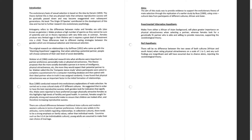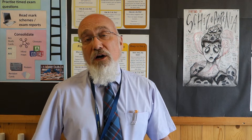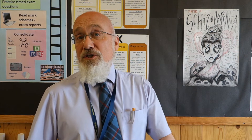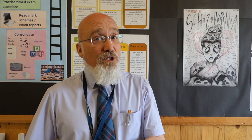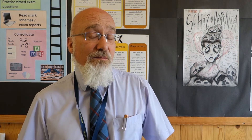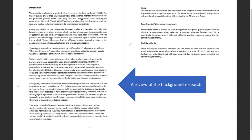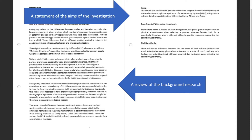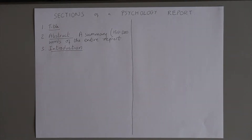After going through the background research, you then move towards the aims of the investigation — a statement of what you're hoping to find out. Do you want to test one of the theories discussed in the introduction? Do you want to build upon conclusions drawn by other psychologists, or try to disprove something? In this study, we can see that the students are looking to replicate an earlier study by Buss, which they've already mentioned in their introduction.